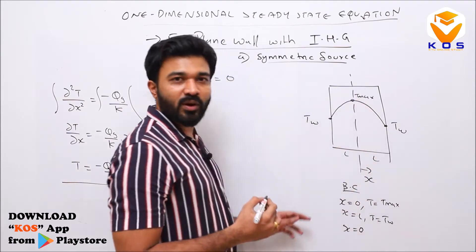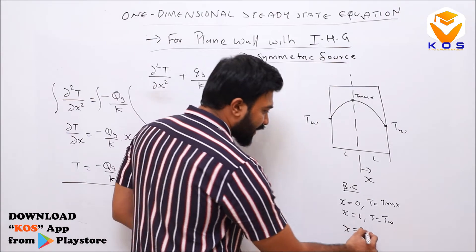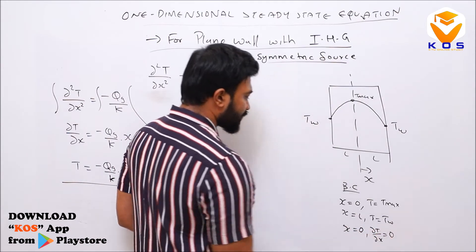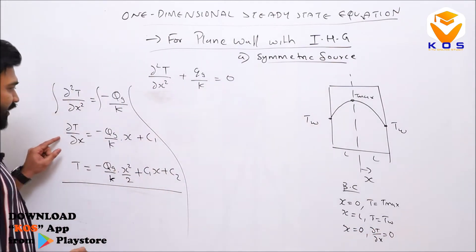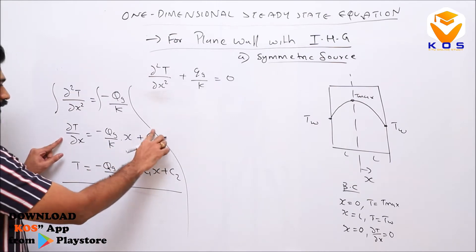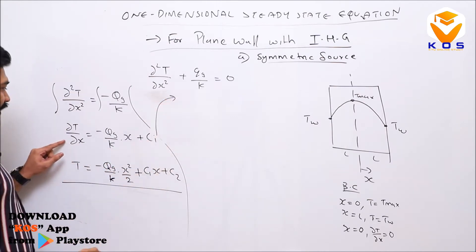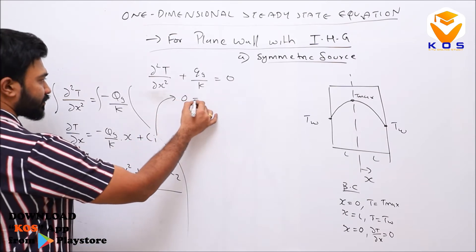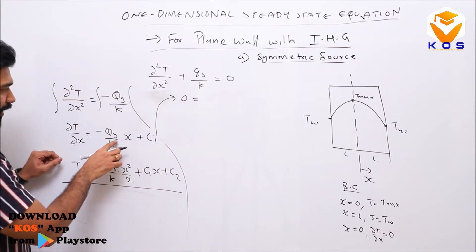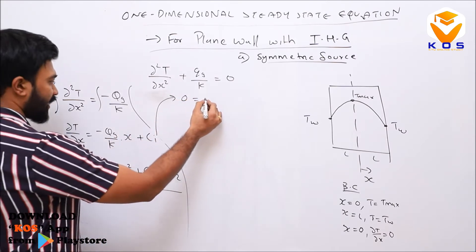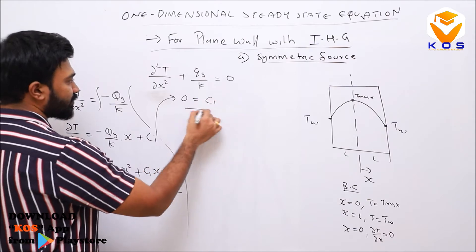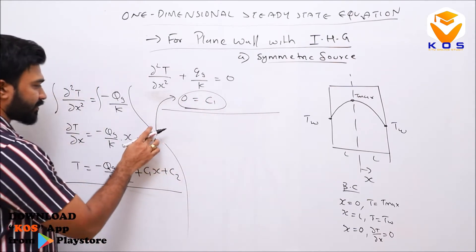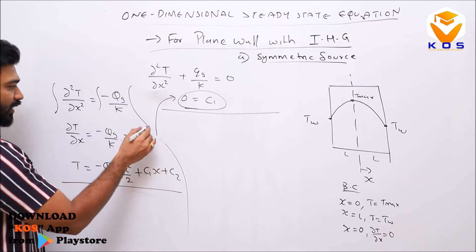At x = 0 the slope dT/dx = 0 due to symmetry. Substituting x = 0 into dT/dx = −qg/k · x + C1 gives 0 = 0 + C1, so C1 = 0.